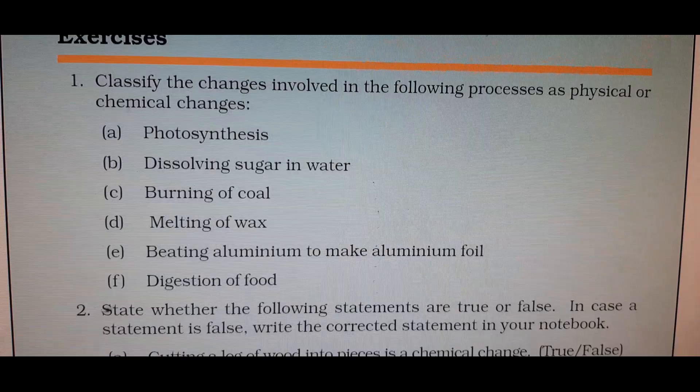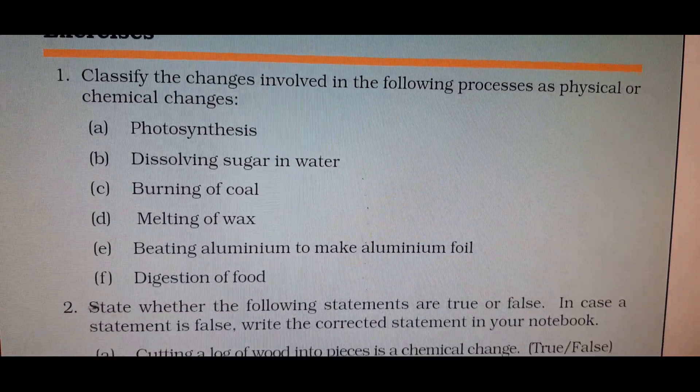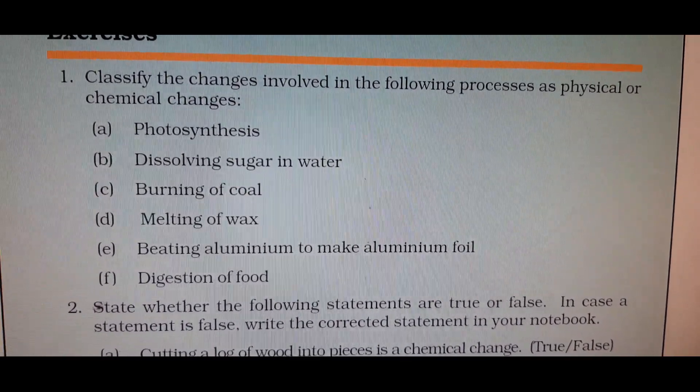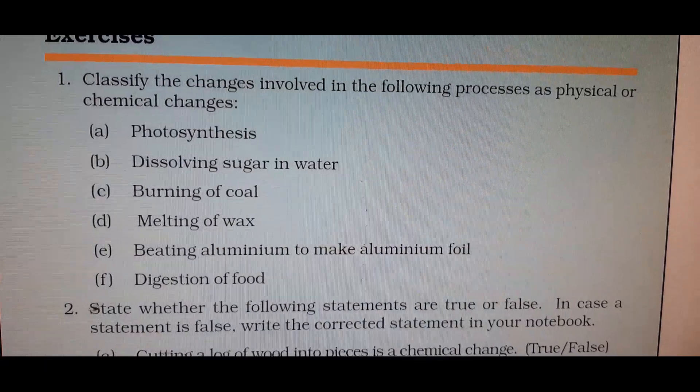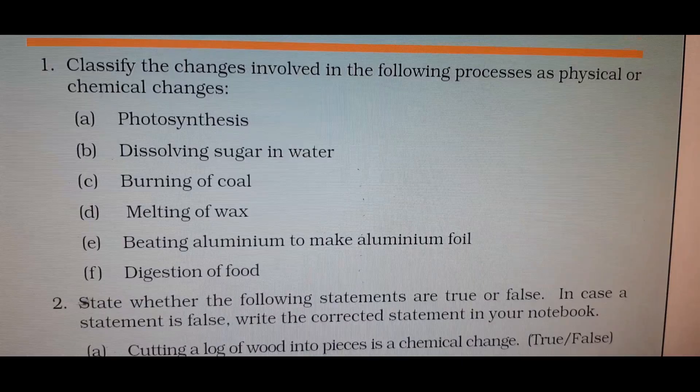Burning of coal is a chemical change. Because when you burn any substance, heat and light is produced. When you burn coal, you get heat and light, and also gas comes out, so it is a chemical change.